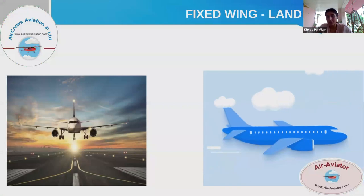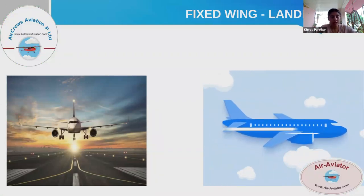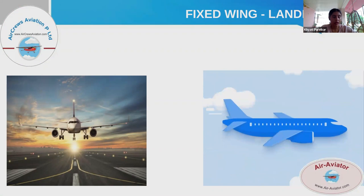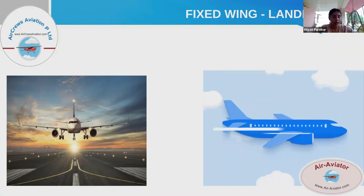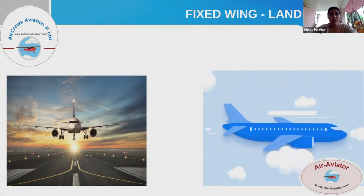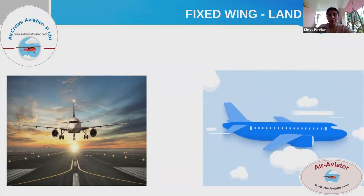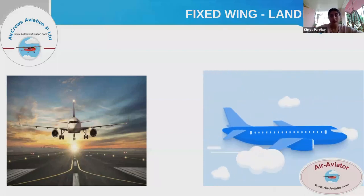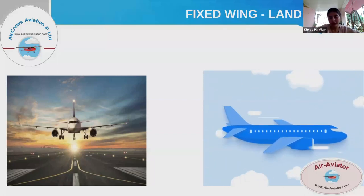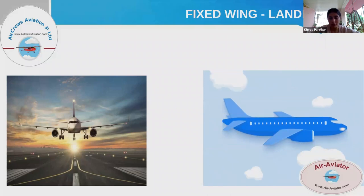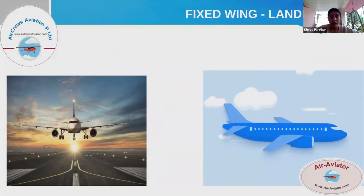Then we have a fixed-wing airplane — a heavier-than-air flying machine capable of flight using wings that generate lift caused by the aircraft moving forward through the air, also aided by the shape of the wings. A landplane is an aircraft that can only take off and land from a land surface, not water or snow. Examples include commercial airliners like the Boeing 777.